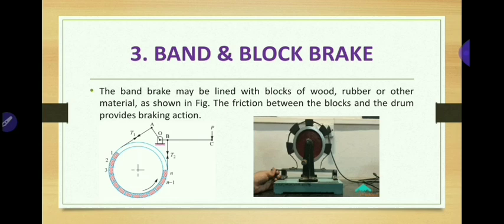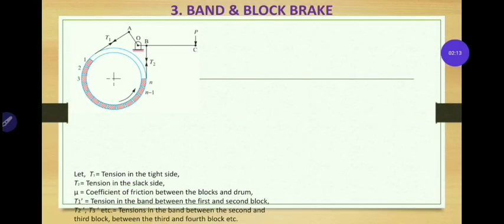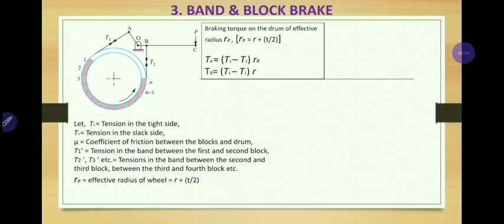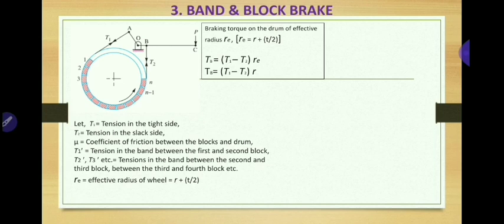For this band and block brake, we will find out the braking torque required to stop the drum. The braking torque TB is given as TB = (T1 - T2) × RE, the same formula as for band brakes. RE is the effective radius, found by RE = R + T/2, where T is the thickness of the band and R is the radius of the drum or wheel. T1 is the tight side tension and T2 is the slack side tension.